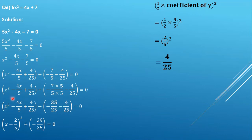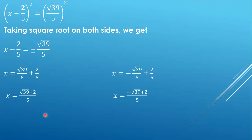Now this part remains the same. We form the perfect square: the square root of the first term, the sign of the second term, and the square root of the third term, which gives us (x - 2/5)². Over here, -35 - 4 gives us -39, and the denominator remains 25, so we have -39/25. Now we move on and get (x - 2/5)².